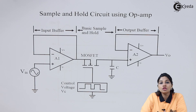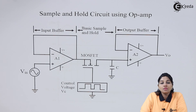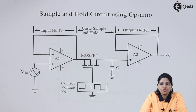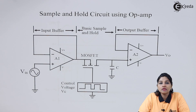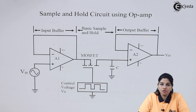This is how the control voltage Vc controls the opening and closing of the switch — that means turning on of MOSFET charges the capacitor to sample the input value, and turning off of MOSFET disconnects the capacitor from input so that it can hold the value until a specific period of time.